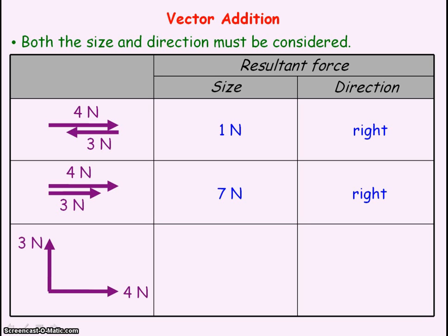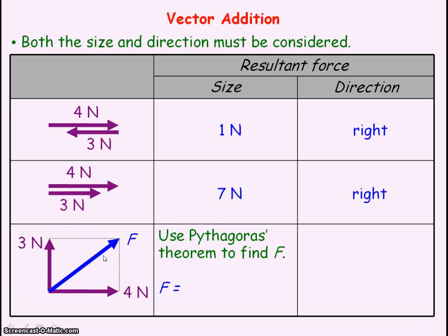If we had a 3N force vertically upwards and a 4N force to the right, then what would be the resultant? We would get the resultant by completing a rectangle, and the resultant will act along the diagonal. We would use Pythagoras to work out the resultant force F — that would be the square root of 3 squared plus 4 squared, which gives us 5N.